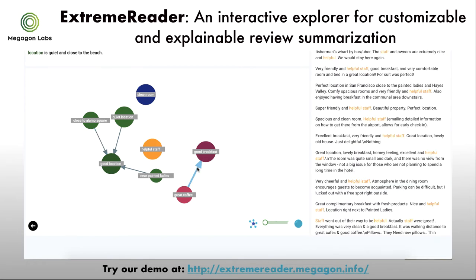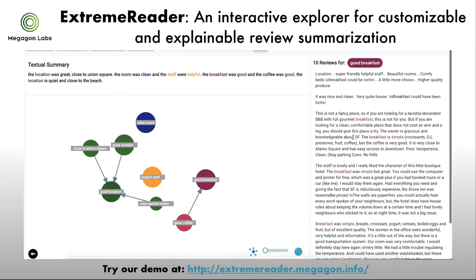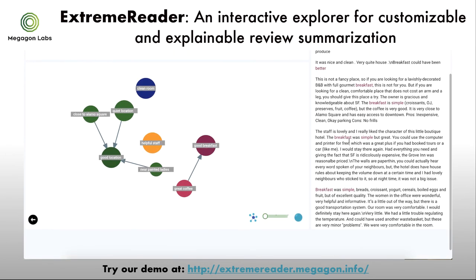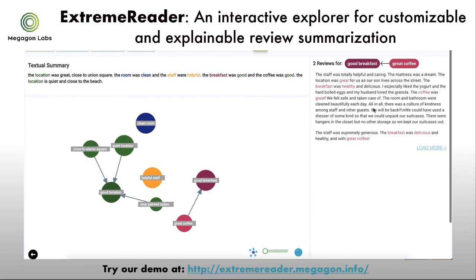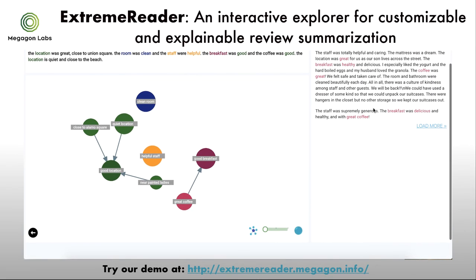The graph summary also allows a variety of interactions. For example, Peter can click on a node or an edge to view the original reviews from which this information was extracted. Peter can also double-click on nodes to drill down and refine the search terms. For example, by double-clicking 'good location,' the search terms and other parts of the content will be refreshed.